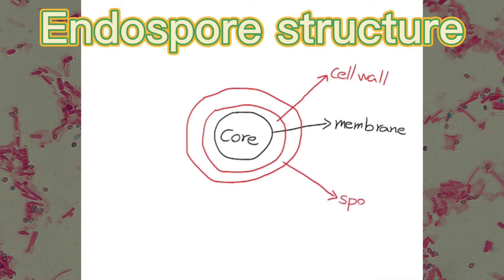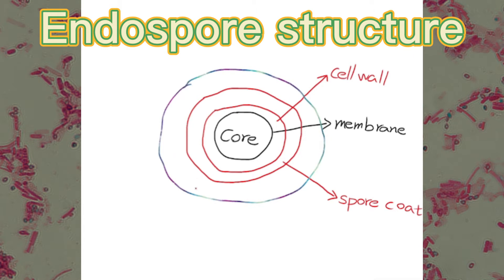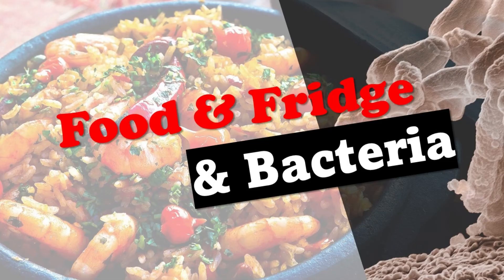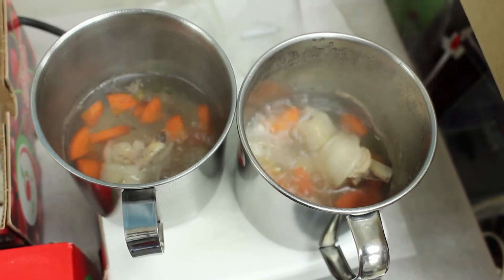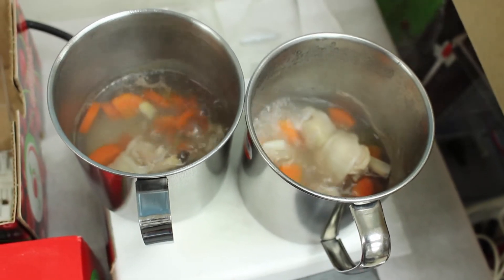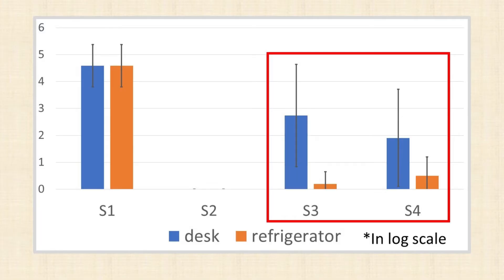Endospores are resistant to harsh environments such as heat, drought, chemicals, and drugs. This makes them an important contaminant in the food industry, since they can endure most food-making processes. As shown in a previous food and fridge video, there are still quite some bacteria that survive the cooking process — they are mostly Bacillus that live on the surface of plants.